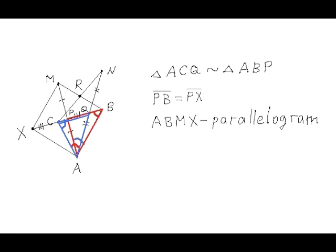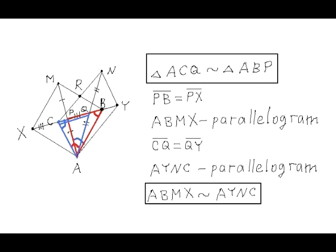since its two diagonals divide each other in half. If we also prolong side BC to point Y so that point Q is the midpoint of segment CY, then we'll obtain the second parallelogram in which point Q is the point of intersection of its two diagonals.